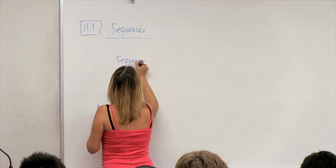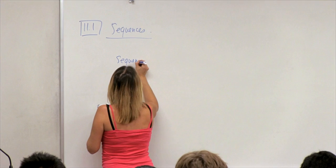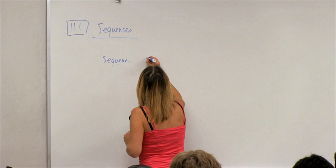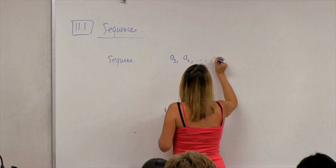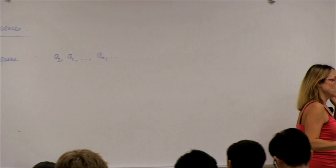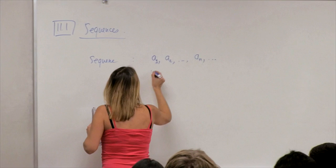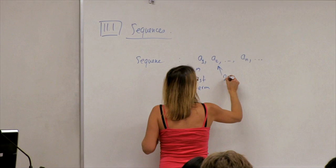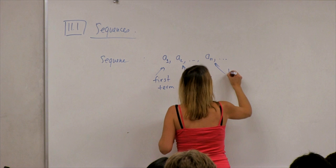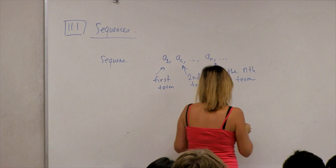A sequence is nothing but a list of numbers written in a certain order: a1, a2, ..., an. In this class we'll be dealing with infinite sequences, so it's an infinite number of terms. The first term is a1, the second term is a2, and the nth term is an. These are the words we'll be using a lot.